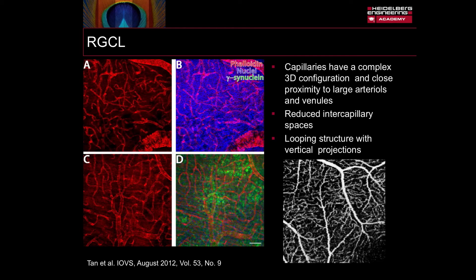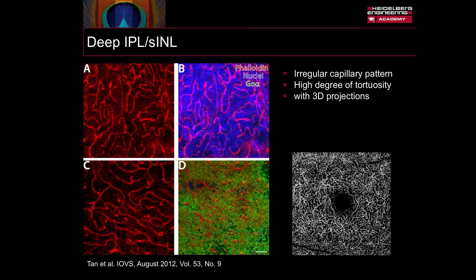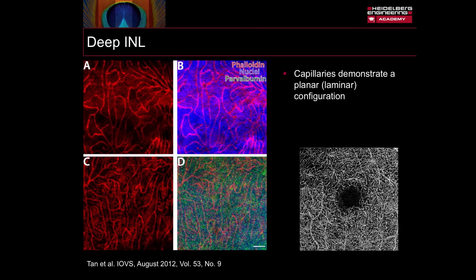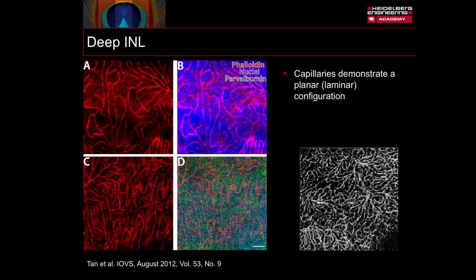This can be visualised exquisitely using the high magnification OCTA image. Within the deep inner plexiform superficial inner nuclear layer zone, the capillaries have an irregular pattern. There is a high degree of tortuosity, once again with 3D projections. Within the deep inner nuclear layer, the capillaries demonstrate a planar or laminar configuration. As we zoom in on the OCTA image, we can also observe a fullerette pattern to the capillary plexus.